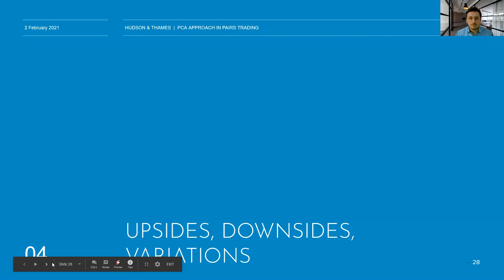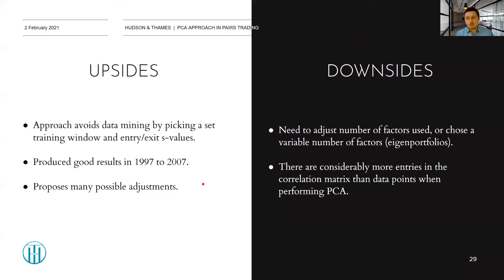Let's discuss upsides, downsides, and variations. On the upside: the approach in its original form avoids data mining by using a large universe of stocks (all US stocks above $1B market cap), using the same estimation windows for each stock, and the same uniform entry/exit S-values of 1.25 and 0.5. It produced very good results from 1997 to 2007 and offers many possible adjustments.